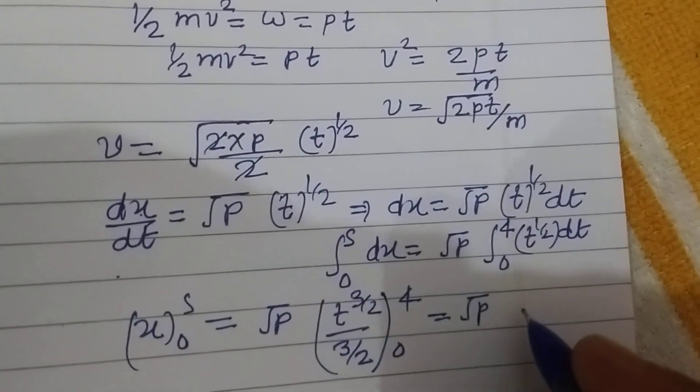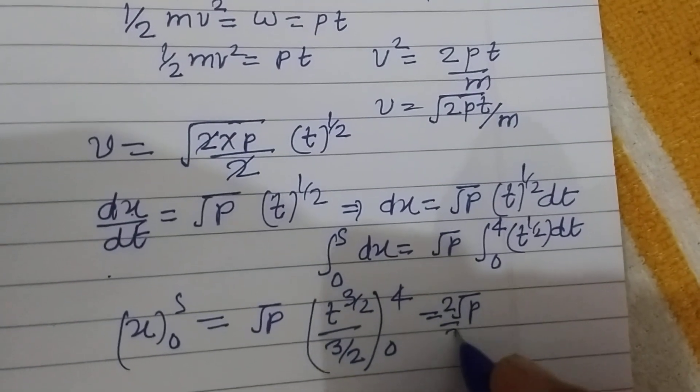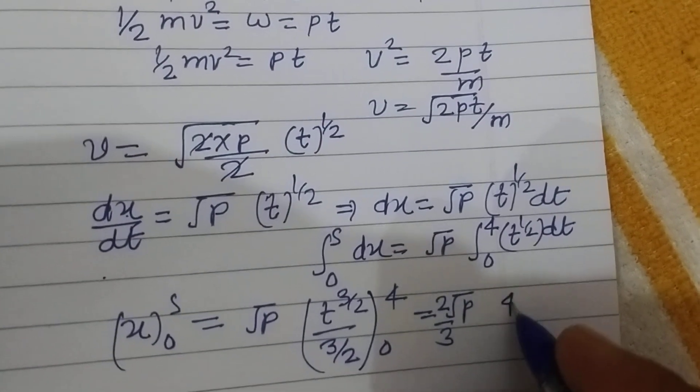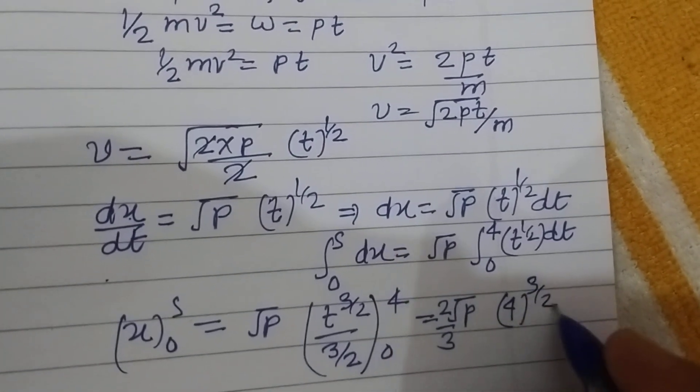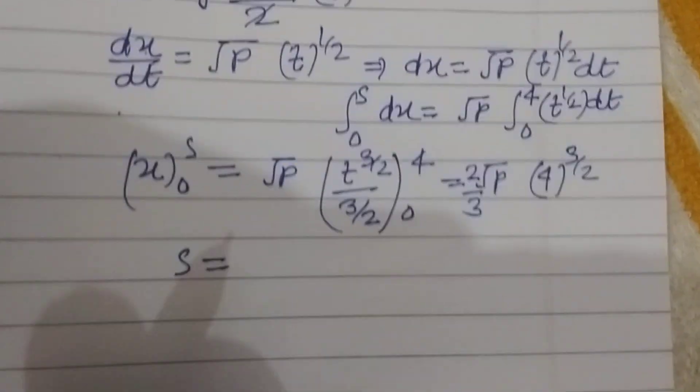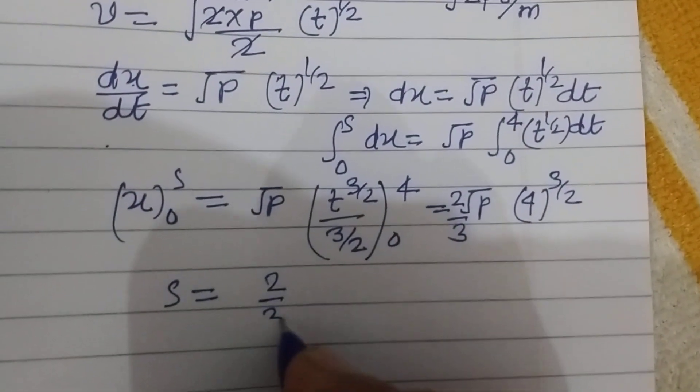So this will be square root 2/3 P, 4 to the power 3/2. And this is s equals 2/3 square root P.